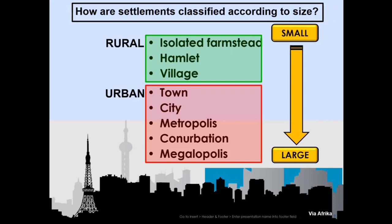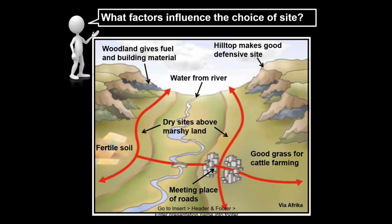We have looked at the bones of a settlement — what is a settlement, the shape, and how does it develop. Now we're going to look at why it developed. We're going to look at two words: site and situation. What is the site? The site, if you want to make it an everyday thing, is where you stay — that is your site. What is your situation? It is the area where you live in.